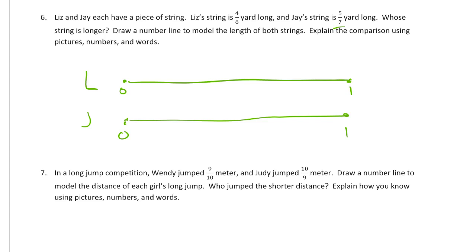This is going to be Liz's string and this is going to be Jay's string. I'm going to label each of these number lines from zero to one yard. Now Liz has hers in sixths and Jay has his in sevenths. This is going to be a real challenge because these fractions are going to be really close to each other — it's going to be hard to tell just by looking.